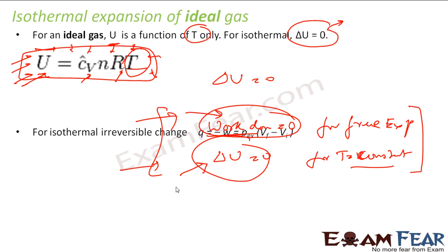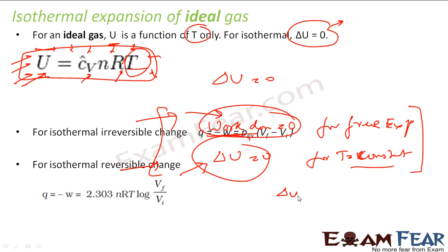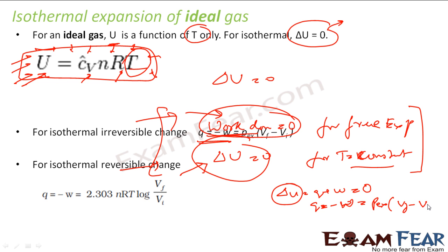Since delta U is zero for an isothermal process, using delta U = Q + W, we get Q = minus W. The internal energy change is zero, but work done can still occur. For a non-reversible isothermal process, W = minus P_external times (V_f minus V_i). For a reversible isothermal process, W = minus 2.303 nRT log(V_f / V_i). So for isothermal: delta U = 0, but work done can be nonzero. For free expansion: W = 0, but delta U can be nonzero.